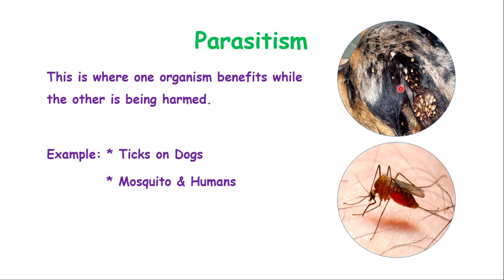For example, ticks on a dog: the tick absorbs blood and nutrients from the dog. The ticks are getting nutrients while the dog is harmed — it loses nutrients from its blood, which can cause weakness and sickness. The tick puncturing the skin can also create an entry point for bacteria and other microbes that cause disease. The dog could also develop deficiency diseases from the nutrient loss.